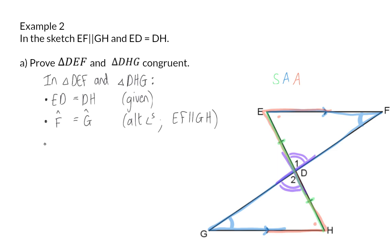For the final pair of angles, I am going to say angle D1 is equal to angle D2. The geometry reason for that, they are vertically opposite angles.